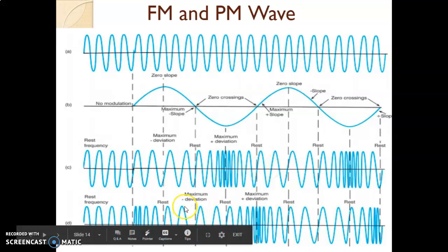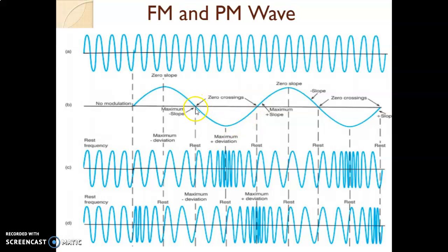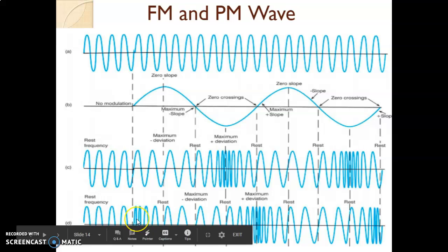How is the PM graph drawn? When the phase is going to change, it changes whenever there is a zero crossing. During the positive half cycle the phase will be different, and during the negative half cycle the phase will be different. So at zero crossing, there should be maximum deviation in case of phase modulation. You can see the phase modulated wave starts with high frequency, and at each zero crossing there is a maximum deviation. At each zero crossing, again there is a maximum deviation.